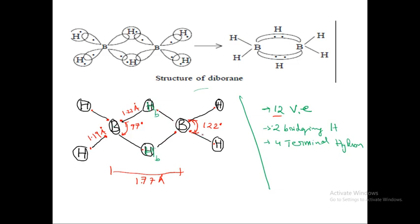Since boron has only three valence electrons, it behaves with a special type of bonding. The boron-hydrogen-boron bridging bond — that is three-center bonding — is bonded with only two electrons. In this B-H-B bond you have only two electrons, whereas you'd normally expect four. Because of that it behaves like a banana bond.